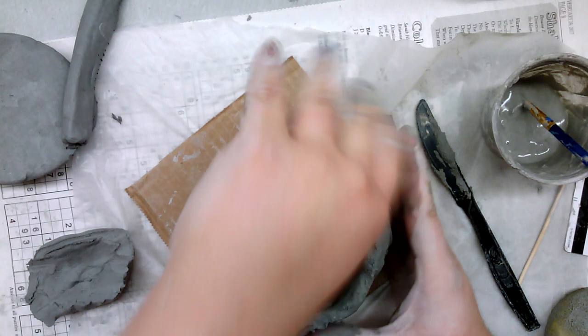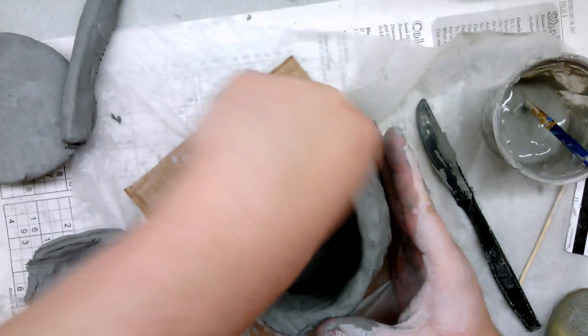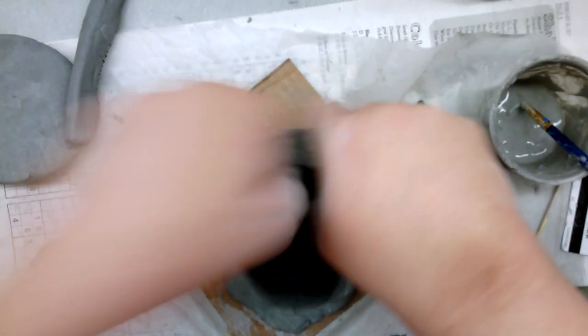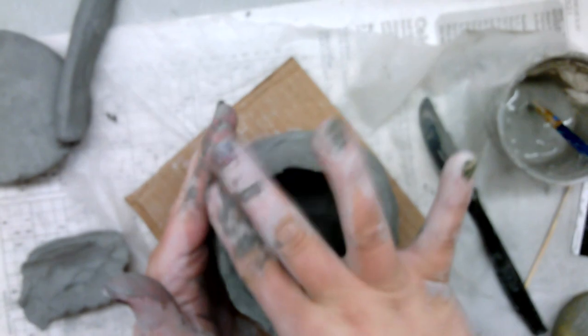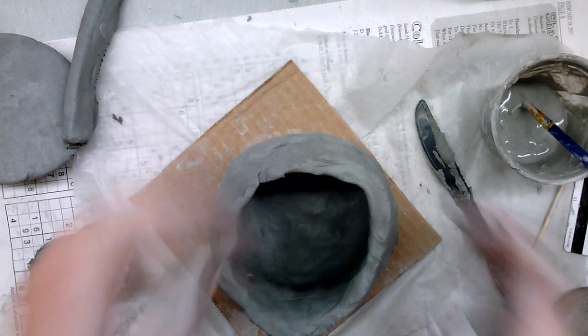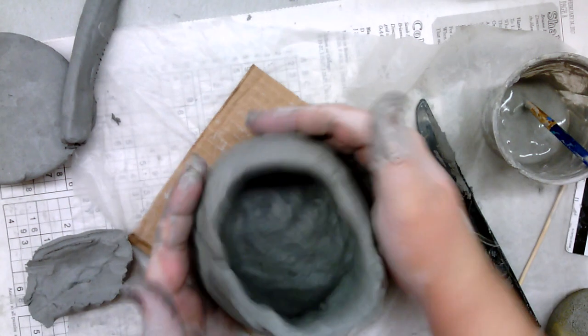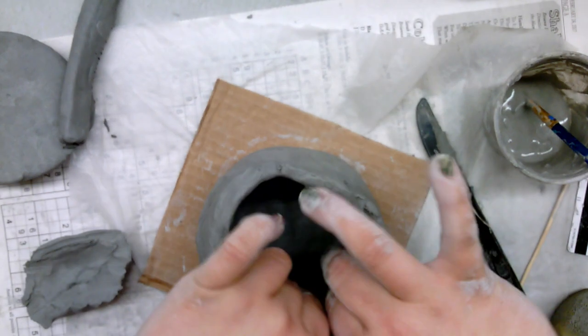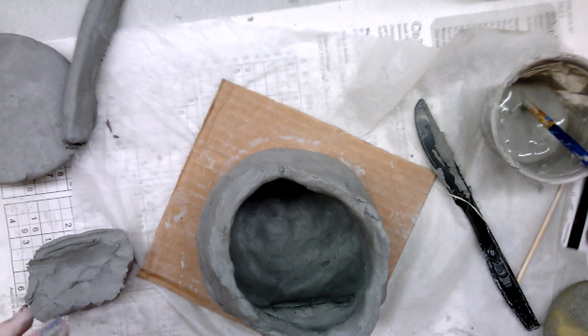Make two pinch pots about the same size, score and slip them together, and then cut off the bottom of the added pinch pot. Then you're just working on pulling out the size of it and smoothing.